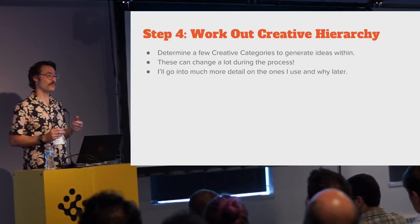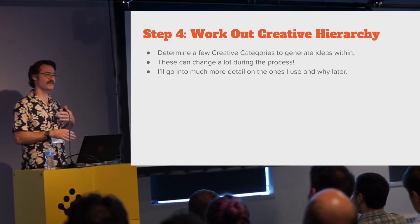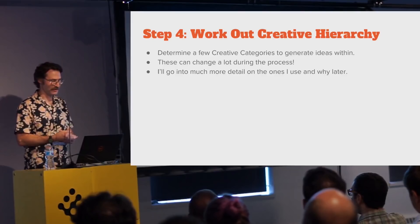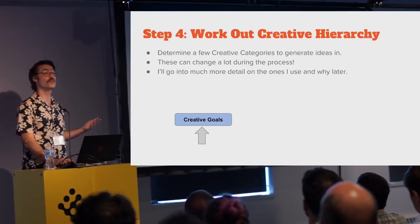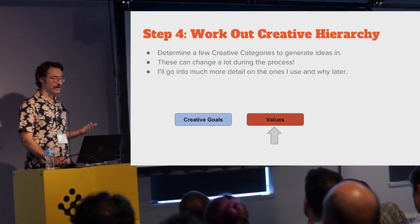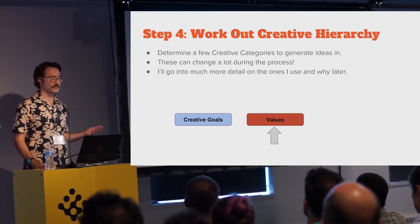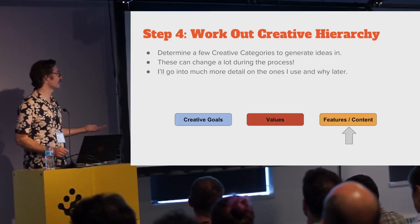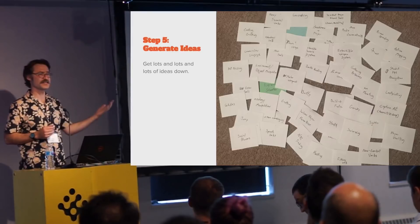From there, work out your creative hierarchy and figure out what categories you want to use for your high, medium, and low-level ideas. The basic idea: you need a category for your creative goals — what's most important, what is the game really about, why would somebody play it — a category for values that guide decision-making, and categories for the specific features and content you want to build.